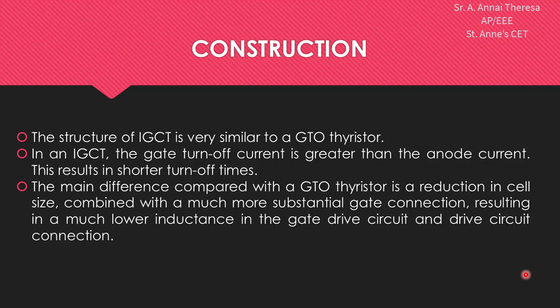In an IGCT, the gate turn-off current is greater than the anode current, so the turn-off time is very short. The main difference compared with the GTO thyristor is a reduction in cell size. It is compact in cell size, combined with a much more substantial gate connection, resulting in a much lower inductance in the gate drive circuit and drive circuit connection.